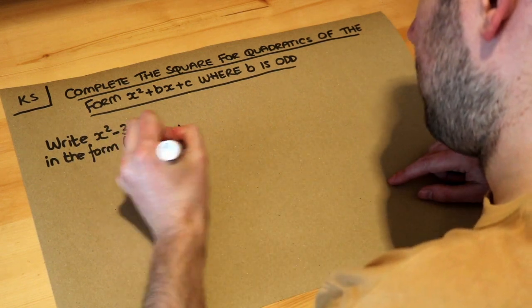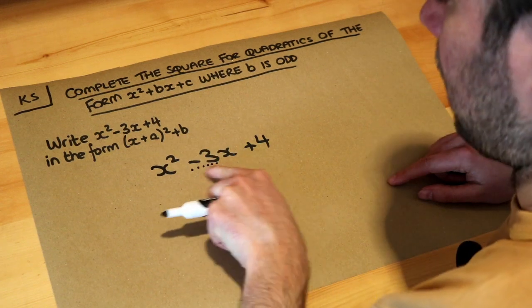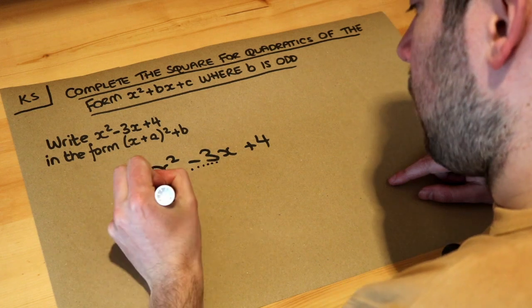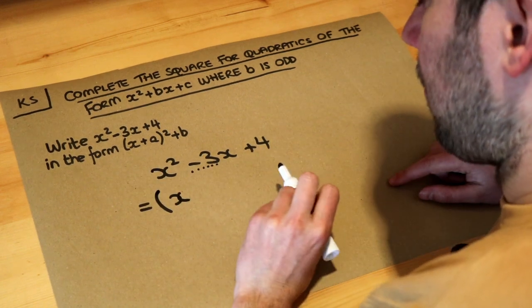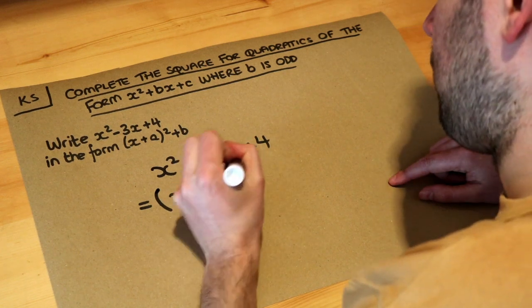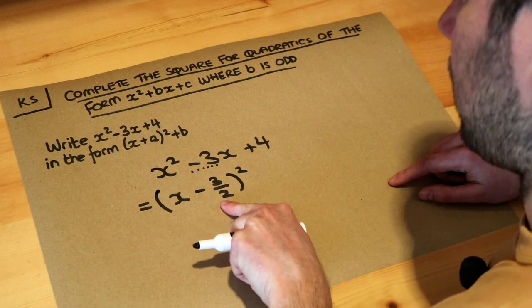So let's do what we usually do. We halve the coefficient of x, so the number in front of the x we halve it. Then we open a bracket, we put x, half of minus 3 is minus 3 over 2. You could do it as a decimal, but there's reasons why it might be better to have it as a fraction. So half of minus 3 is minus 3 over 2.